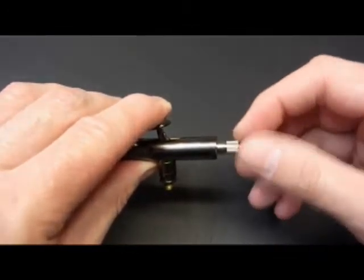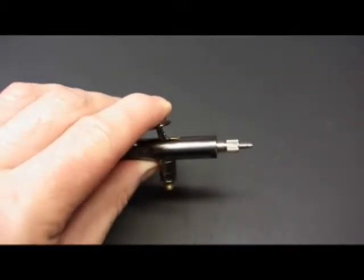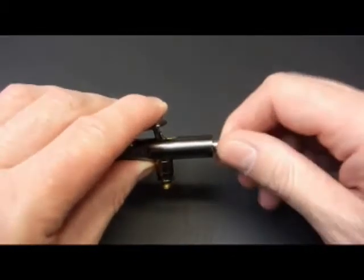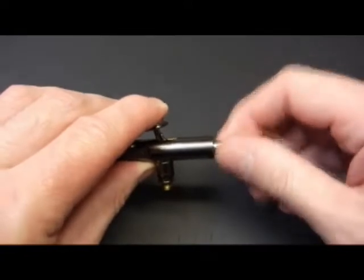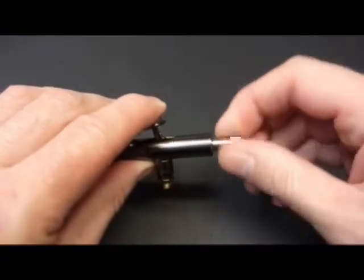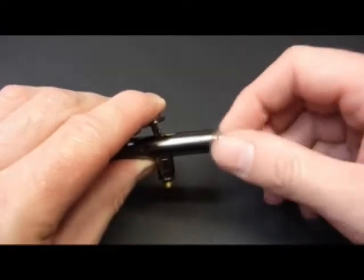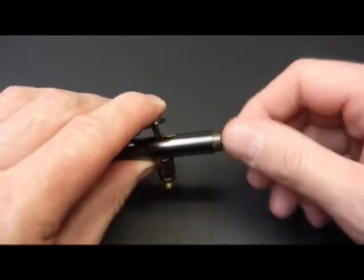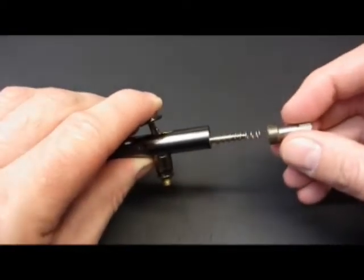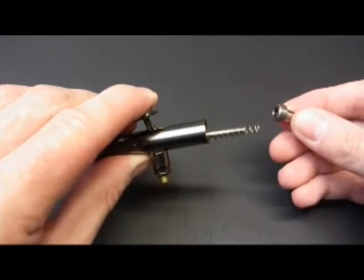Next we remove the nut. This will then allow us to take off the spring tensioner. Unscrew that all the way out. And this reveals the spring itself.